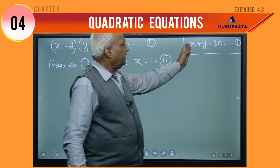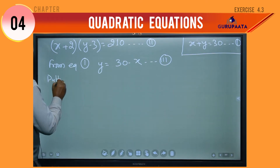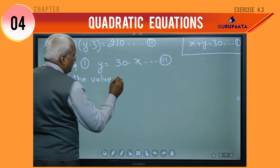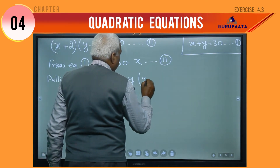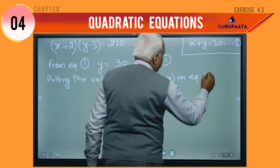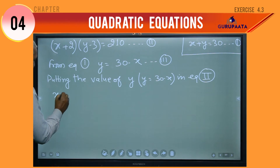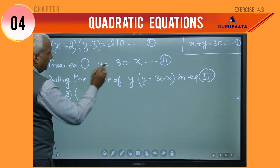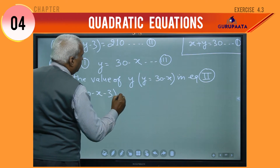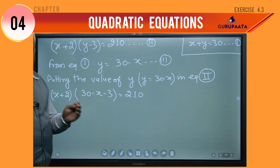Putting the value of y equal to 30 minus x into equation number 2, we get x plus 2 multiplied by 30 minus x minus 3 equal to 210. This simplifies to x plus 2 multiplied by 27 minus x equal to 210. This is to be simplified and we will get a quadratic equation.